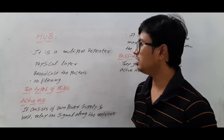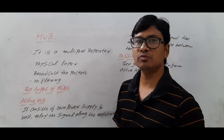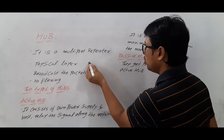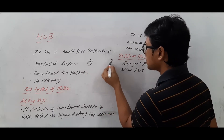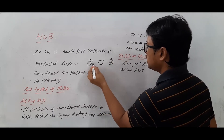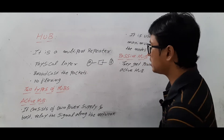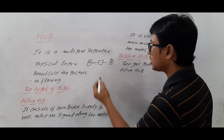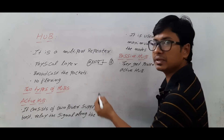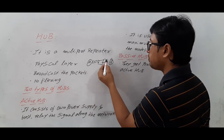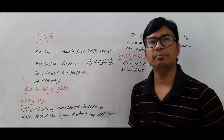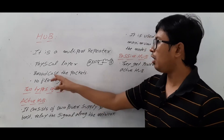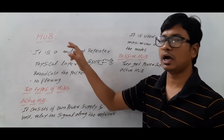It consists of only the physical layer. In the repeater, we have only two nodes — source and destination — with only two ports. Whatever packet is coming, the repeater just forwards the packet by regenerating the signal strength back to its original strength. However, when it comes to the hub, we have multiple ports.